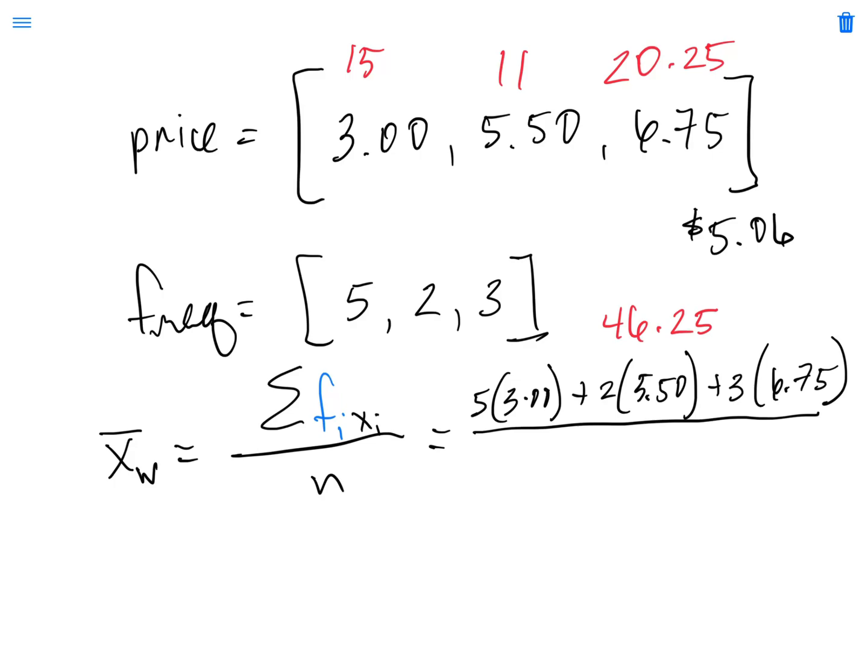But it's not in dollars anymore, it's in dollars times frequency, and we need our answer to be dollars when we're finished here. So what we need to do is, instead of dividing by n as we would normally have done, we're going to divide by the sum of our frequencies.